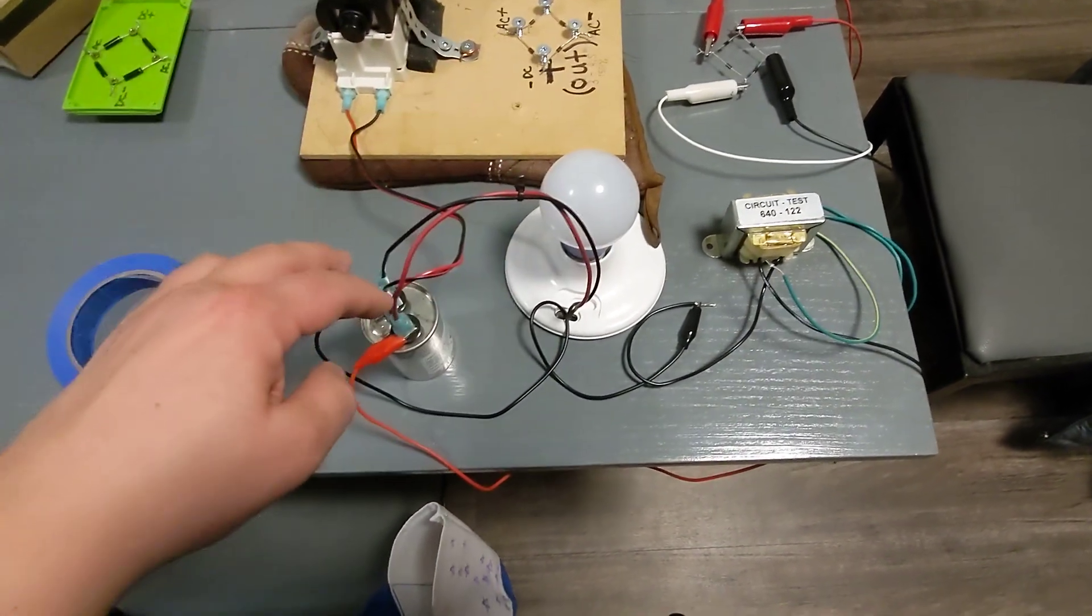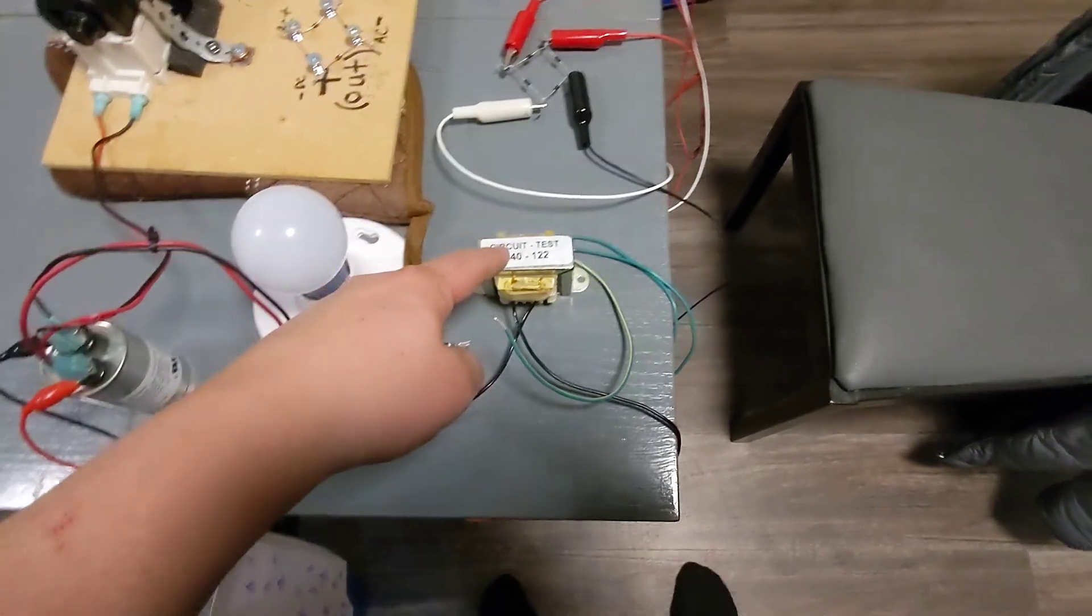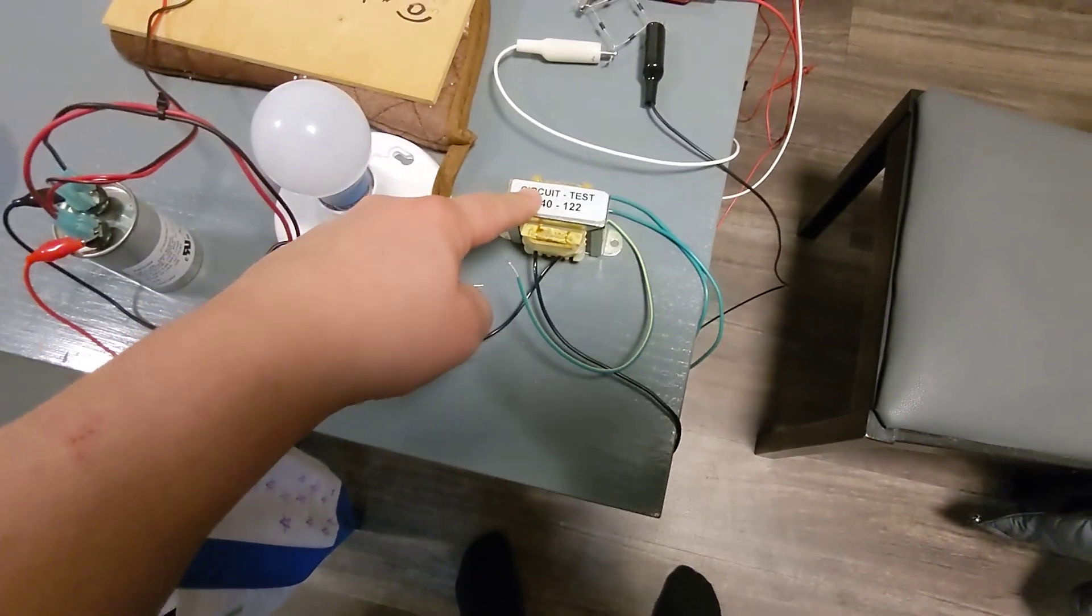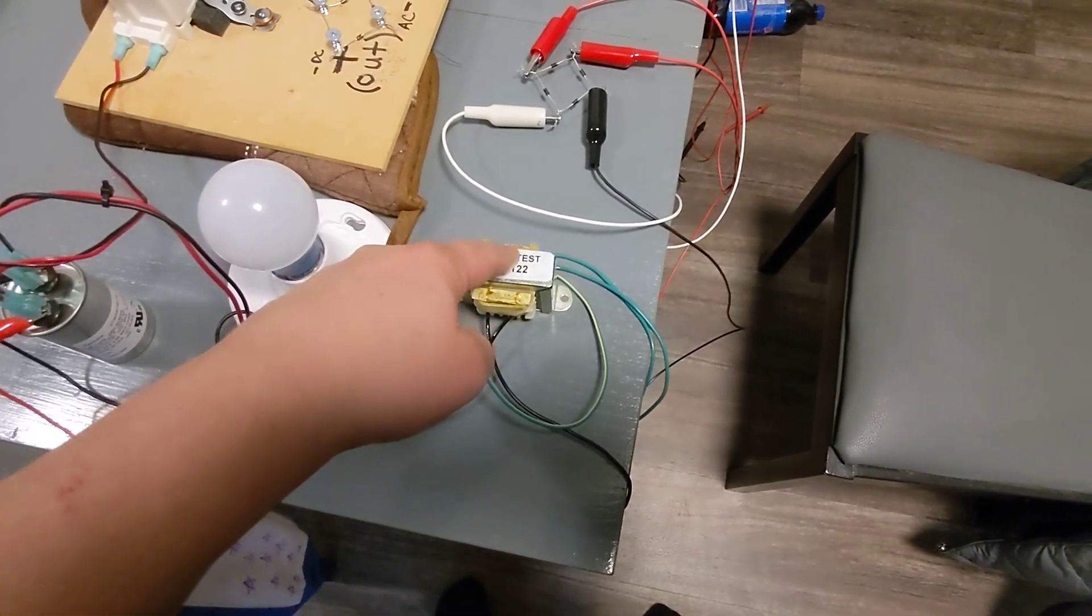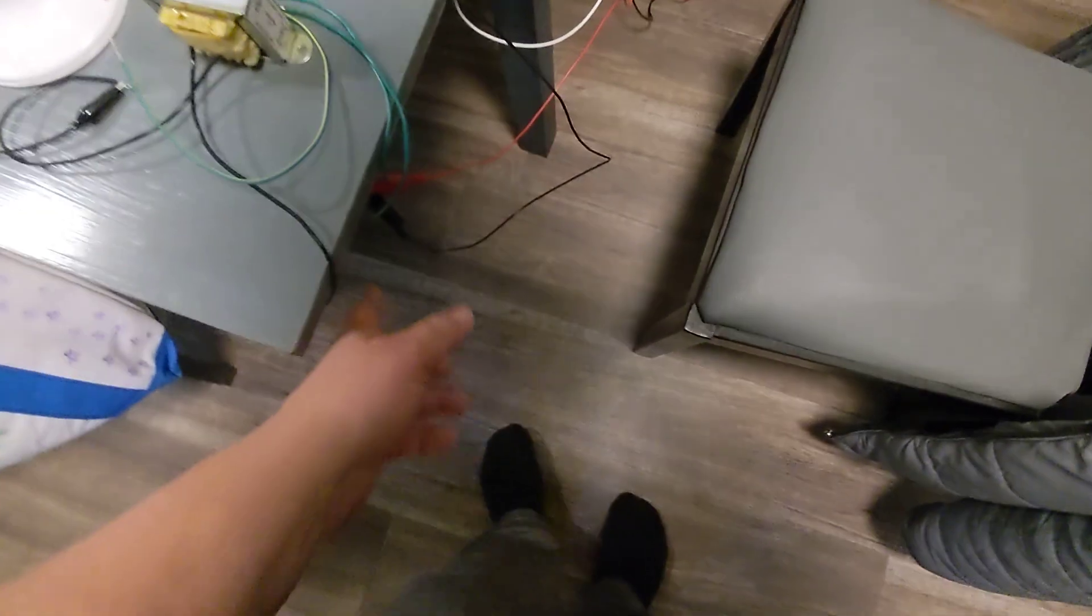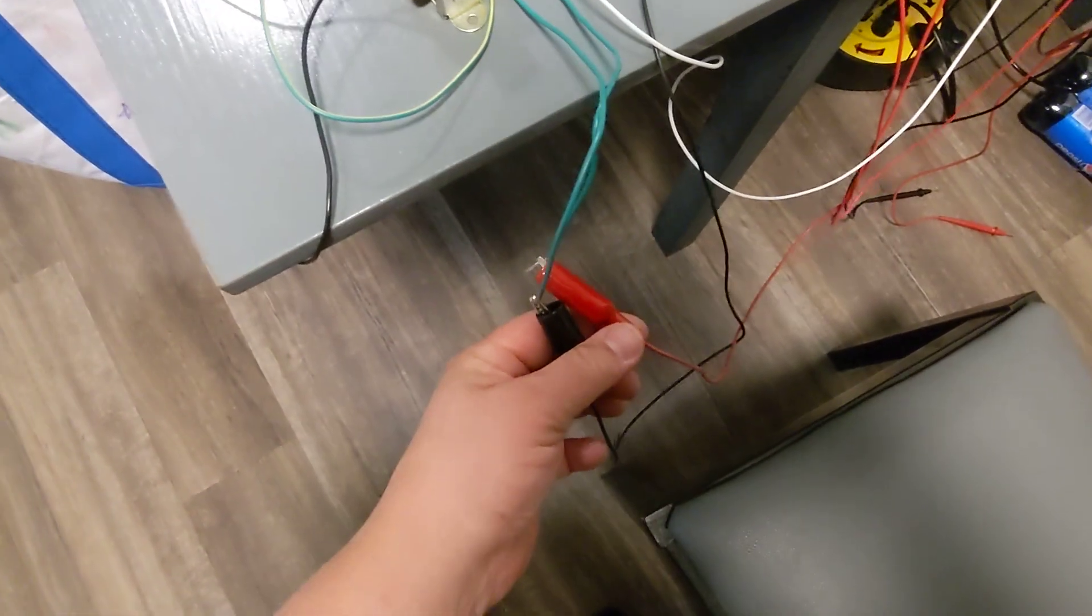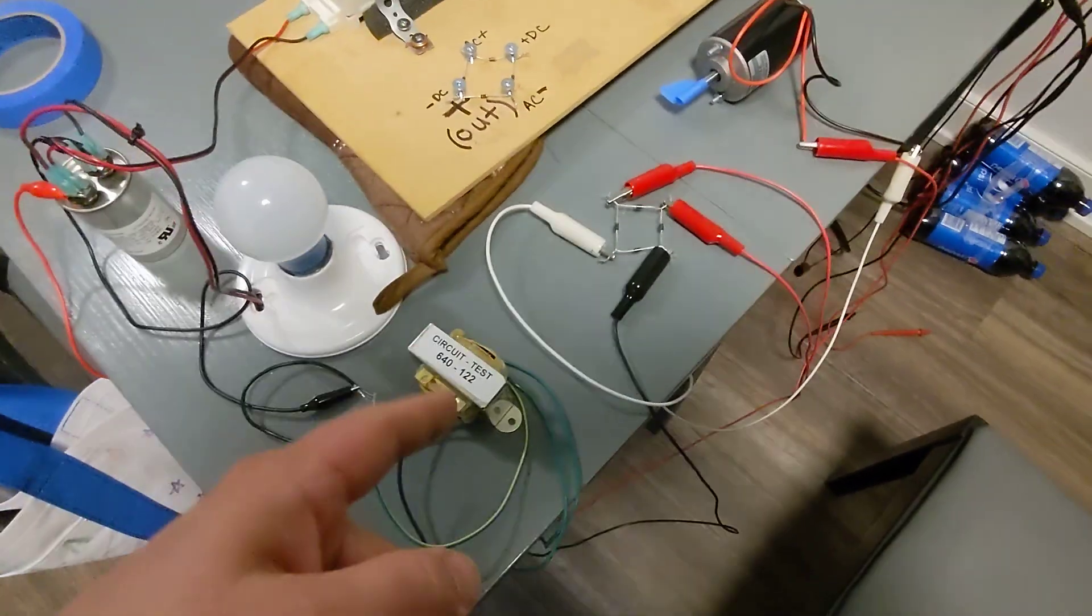And then from there I'm also going to do a step down through a transformer. This is a step down transformer. So you've got 115 volts coming in and then you've got 12 volts AC coming out the other side. I got the two wires hooked up here and they are going to go from there because it's 12 volts AC.